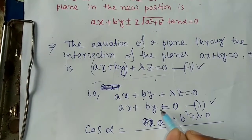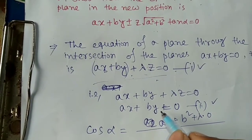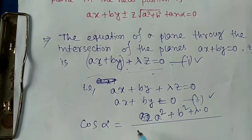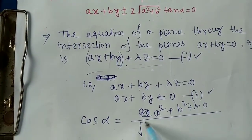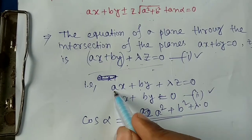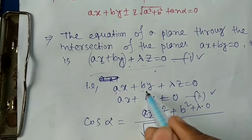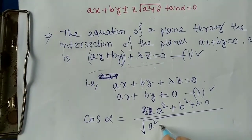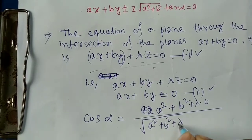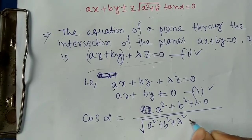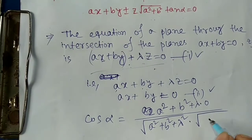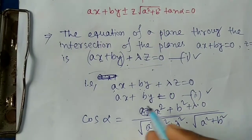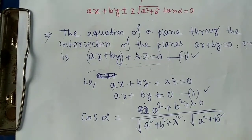Since z's coefficient in the plane x plus by equals to 0 is zero, lambda times zero is zero. The denominator is: root of (a squared plus b squared plus lambda squared) times root of (a squared plus b squared). So cos alpha equals to (a squared plus b squared) divided by root of (a squared plus b squared plus lambda squared) times root of (a squared plus b squared).